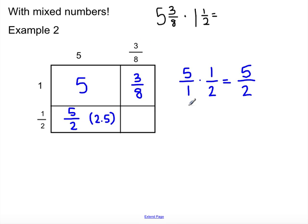And then we have 3 eighths times 1 half. And I'll do this over here. 3 over 8 times 1 half. Multiplying my numerators, I get 3. Multiplying my denominators, I'm going to get 16. So, I have 3 sixteenths.